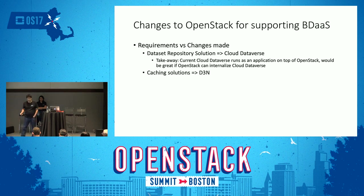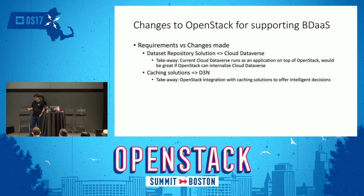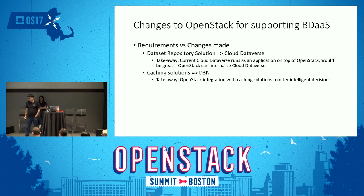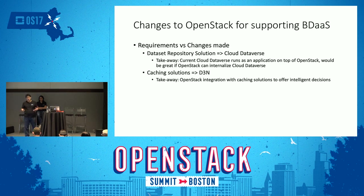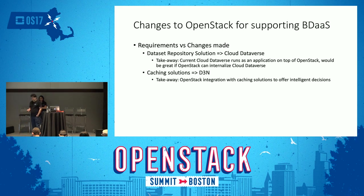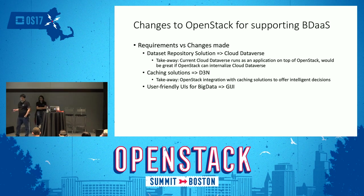Our takeaway for the OpenStack community: if OpenStack could integrate with caching solutions, it could offer more intelligent decision-making capabilities — for example, if OpenStack is aware of data placement within the cache, it could make smarter VM placement and data routing decisions. Finally, we had to develop user-friendly UIs — the previous talk discussed this, and we also covered the Gigi project on Monday.